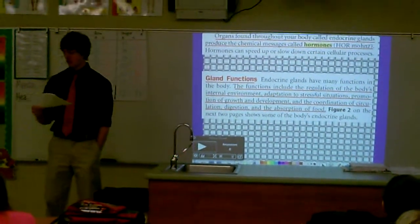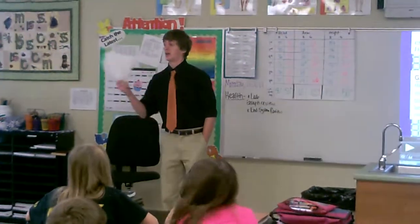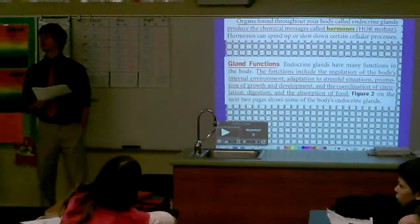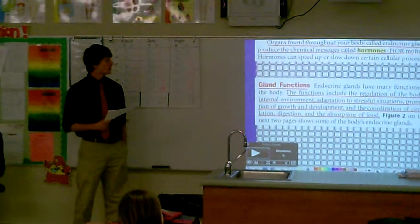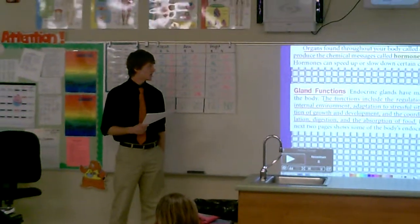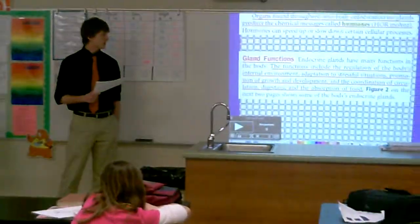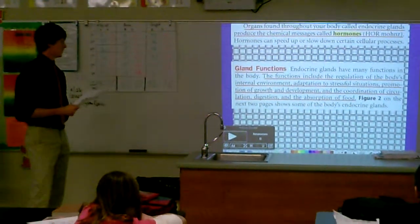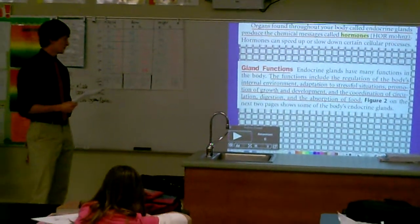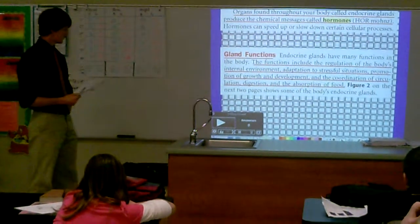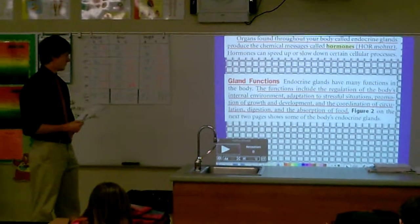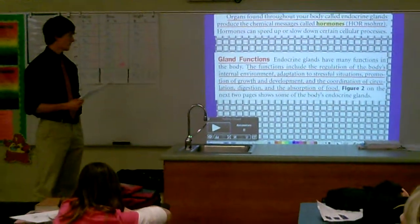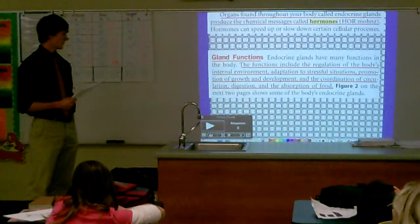Who wants to read about hormones? Hormones — the body's endocrine glands produce the chemical messages called hormones. Hormones can speed up certain cellular processes. Endocrine glands have many functions in the body. Functions include the regulation of the body's internal environment, adaptation to stressful situations, promotion of growth and development, and coordination of circulation, digestion, and absorption.